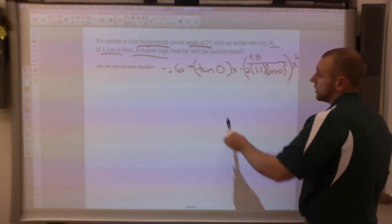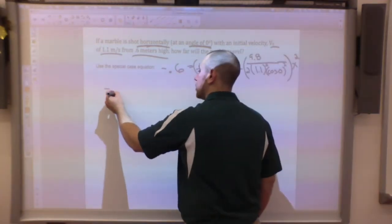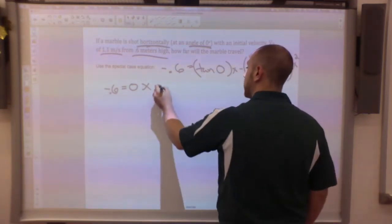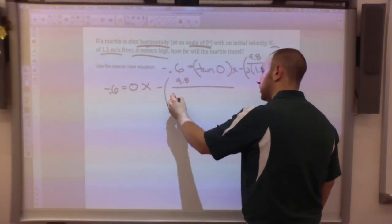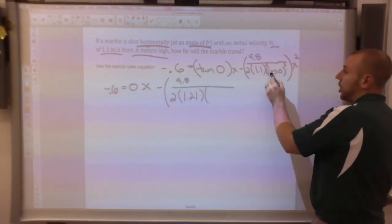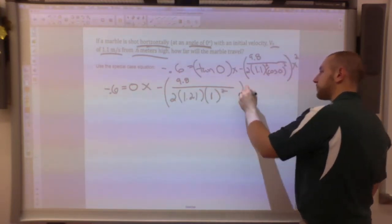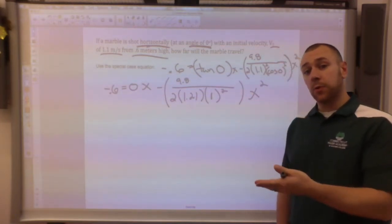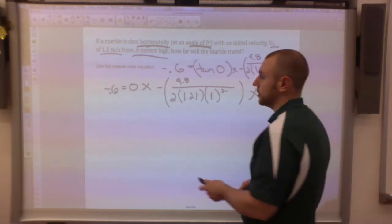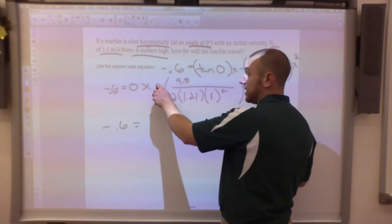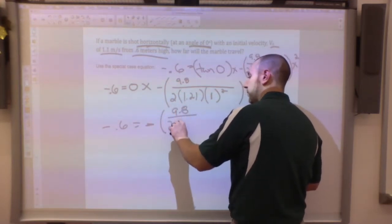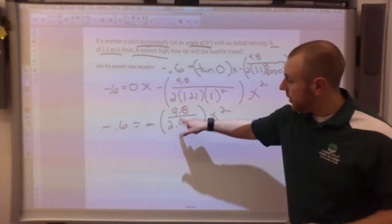I start putting negative 0.6 equals the tangent of zero times x minus 9.8 over 2 times my initial velocity squared times my cosine of zero squared x squared. The tangent of zero when I plug it into the calculator is actually zero, so it's zero times x which is just going to drop away. My cosine of zero turns out to be one. I can square this, well one squared is just one. So I got negative 0.6 equals minus 9.8 over 2.42 x squared.